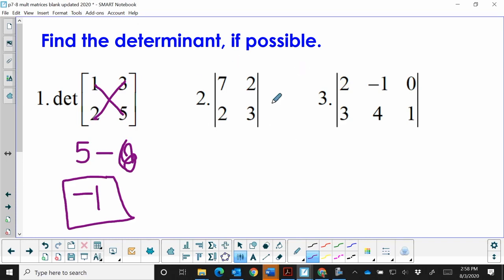Now let's look at the second one. This one doesn't have the word 'det' in front of it, but it does have the absolute value bars, so this is also asking me for the determinant. Let's multiply a and d, so that's 21, and we're going to subtract two times two, which is four. So the determinant of the second matrix is positive 17.